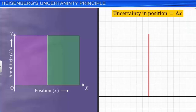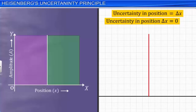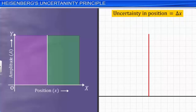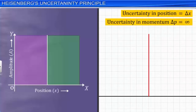When the uncertainty in the position of the particle is zero, we say that we have localized the particle. But for this, we used an infinite number of wave functions representing the components of different momentums of the particle. In this process, we lost all information regarding the momentum of the particle. Thus, the uncertainty delta p in the determination of the exact momentum of the particle is now infinity. From this discussion, it is clear that the exact position and momentum of a particle cannot be determined simultaneously.